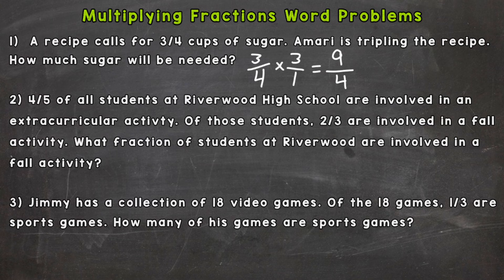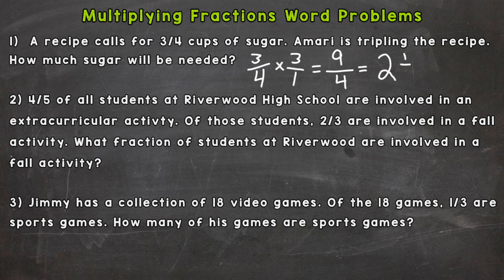That's our answer, but it's improper, so we need to get it into a mixed number — or maybe it works out to a whole number. We need to do nine divided by four. How many whole groups of four can I pull out of nine? Two whole fours, which gets me to eight. I have a remainder of one, and I keep my denominator of four the same. Since it's a word problem, I need to answer with a label: two and one-fourth cups.